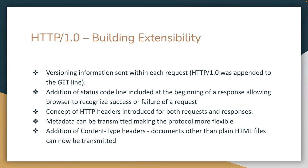Fast forward to HTTP 1, we get versioning information sent with each request. We have the addition of status codes, which allow the browser to determine the success or failure of a request. We have this concept of HTTP headers, introduced for requests and responses. Metadata can be transmitted, which makes the protocol more flexible, and we have content type headers which allow us to send documents other than plain HTML.